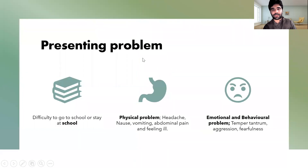If we see the presenting problems of school refusal, these children have difficulty to go to school or difficulty to stay at school. The physical problems which start before going to school or at school include headache, nausea, vomiting, abdominal pain, and general feeling of not being well. The emotional and behavioral issues include temper tantrums, aggression, and being fearful all the time.